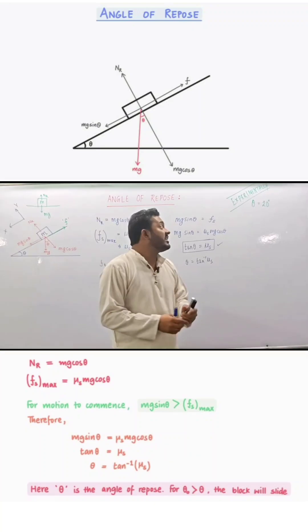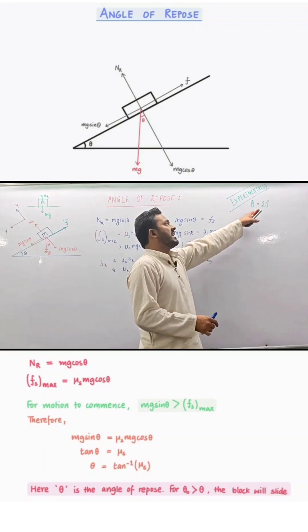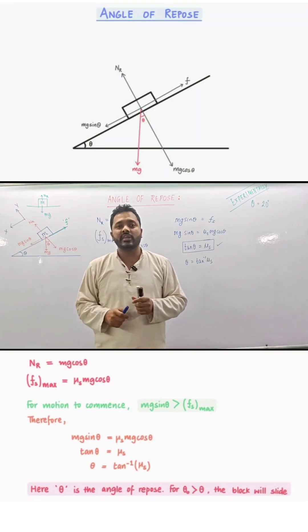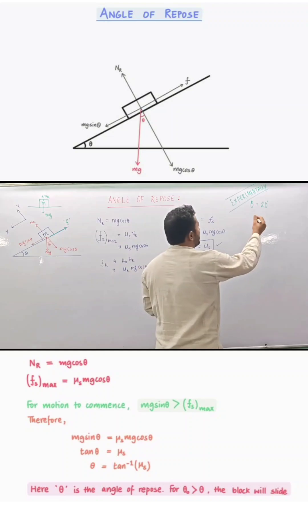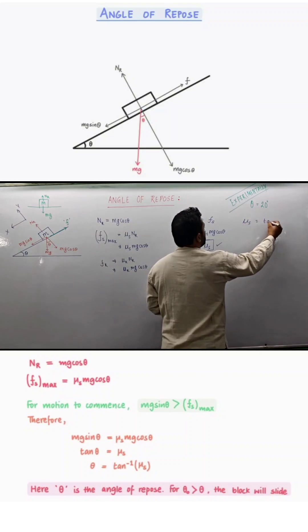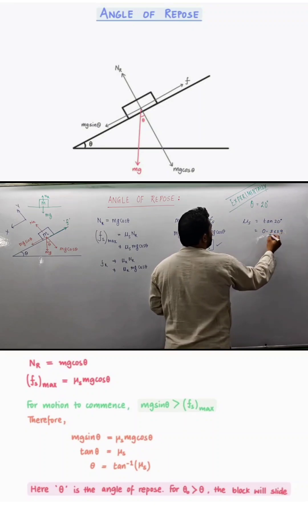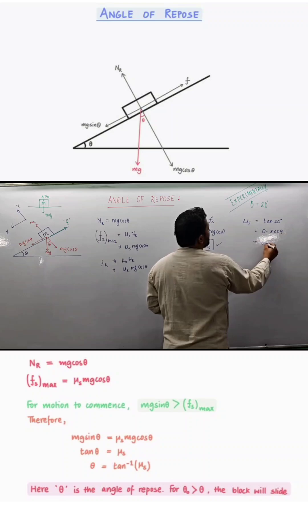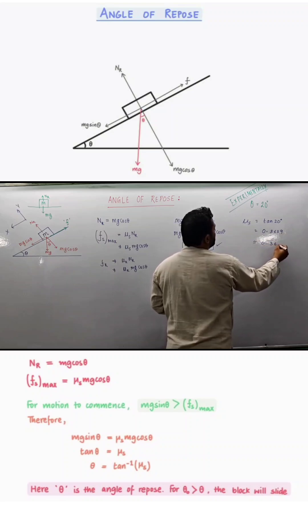Experimentally we have obtained the angle at which the block starts sliding down to be 20 degrees. Now if we use this 20 degrees, we can find mu_s which is equal to tan(20°). On solving we obtain 0.3639, which we can roughly say is equal to 0.36.